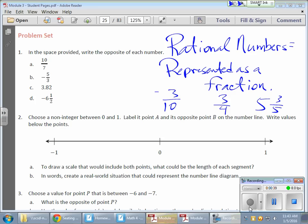Now, they could also be negative, so negative three-tenths or negative five and three-fifths. Those are rational numbers, as opposed to integers, which are positive or negative whole numbers. Rational numbers can be represented as a fraction. That does include whole numbers as well, because whole numbers can be represented as fractions.